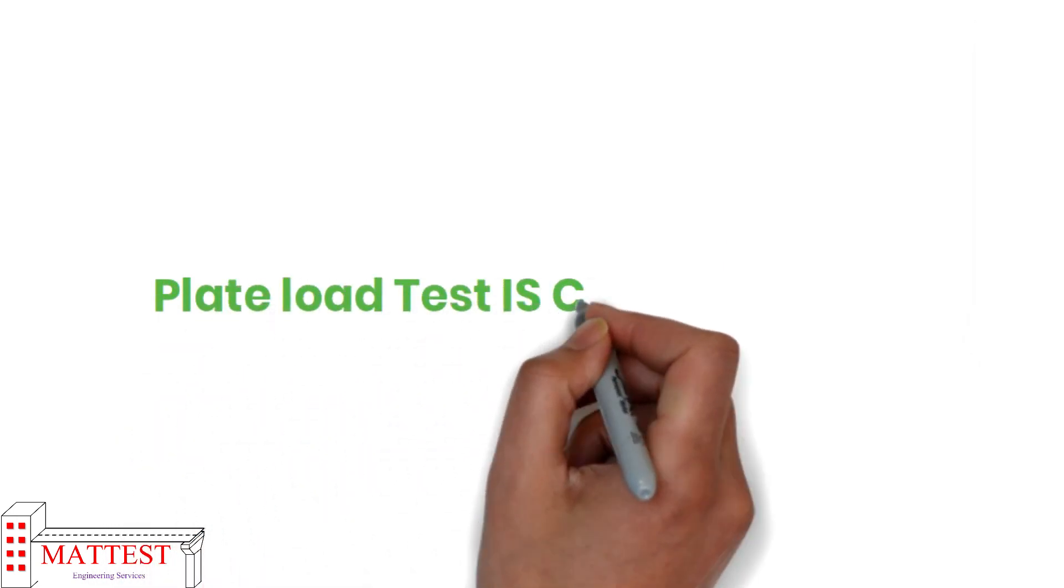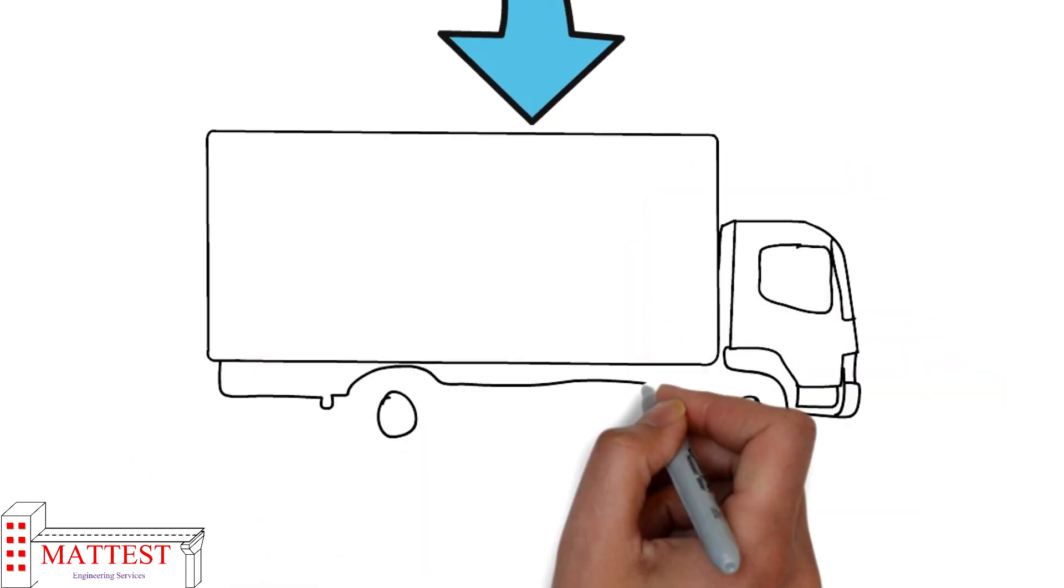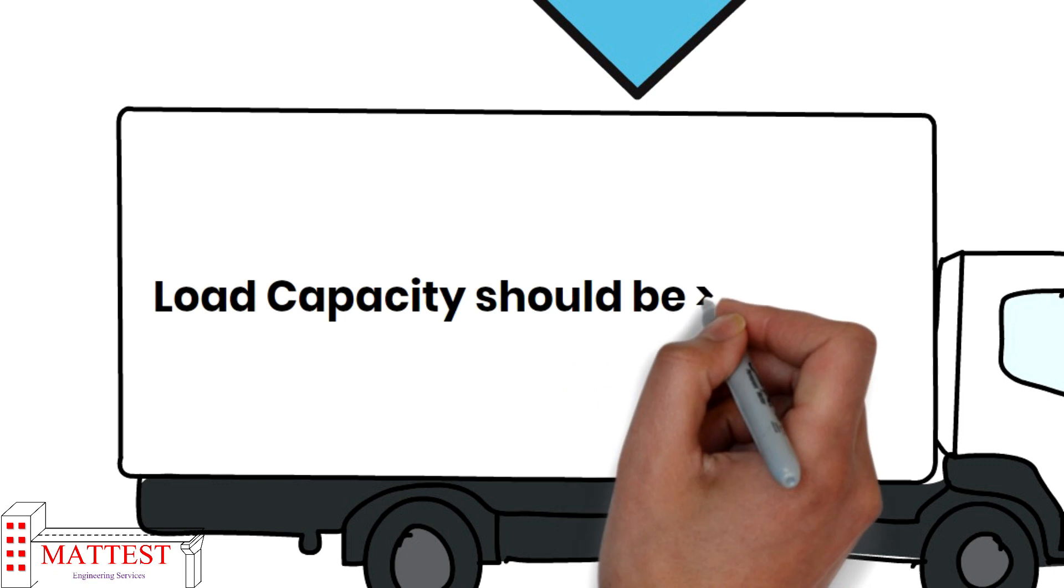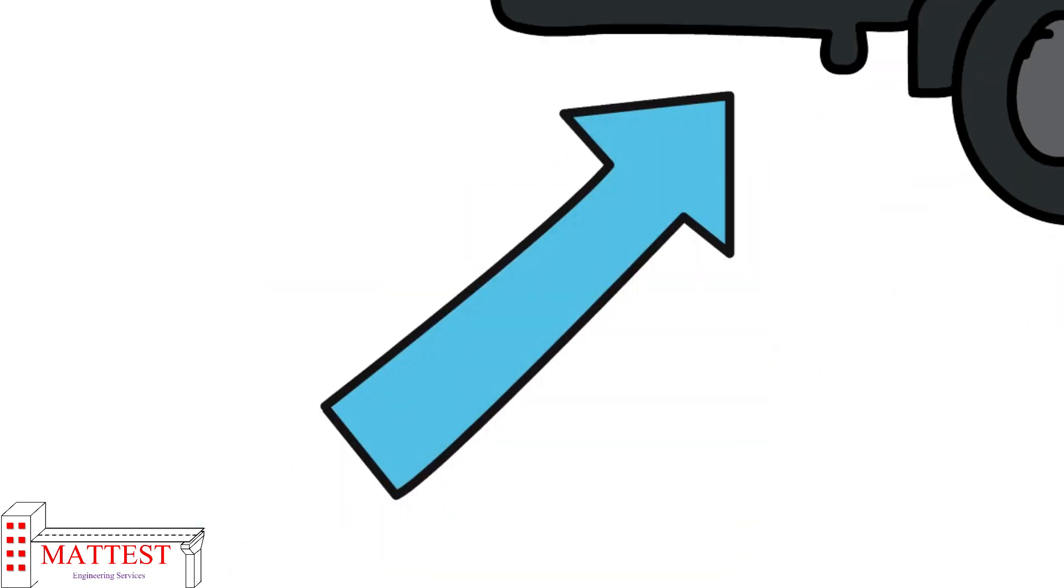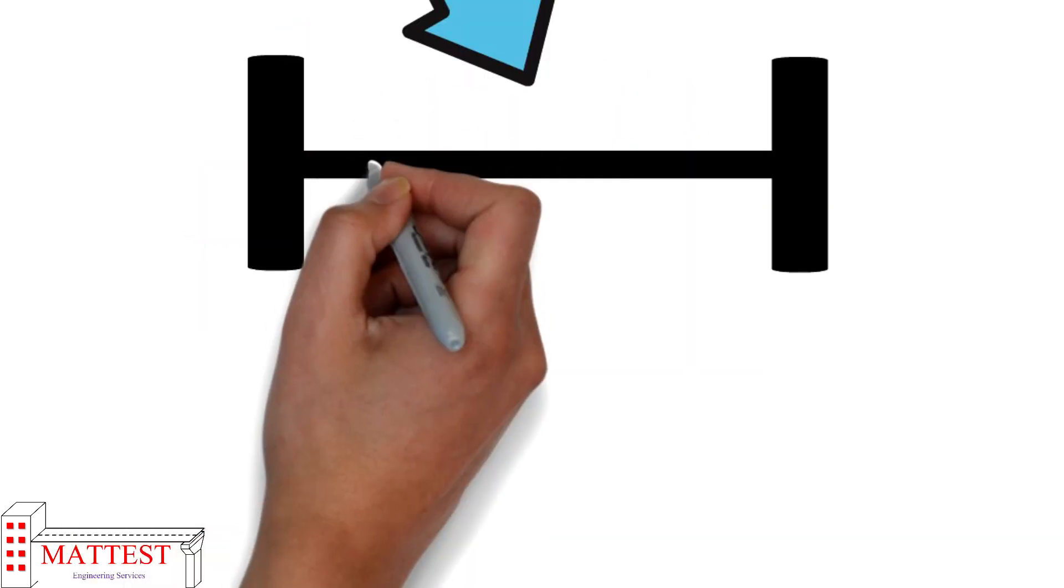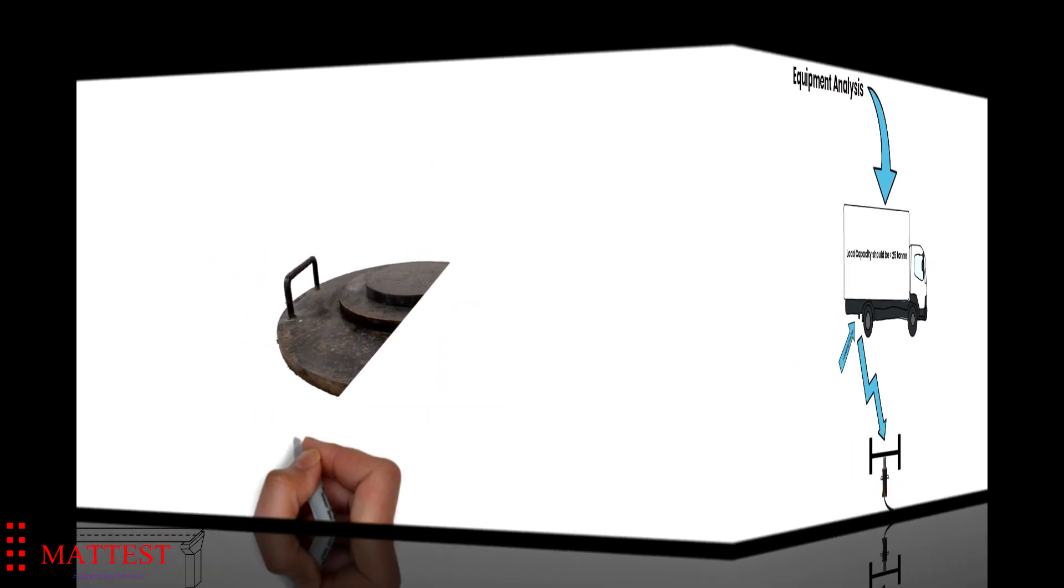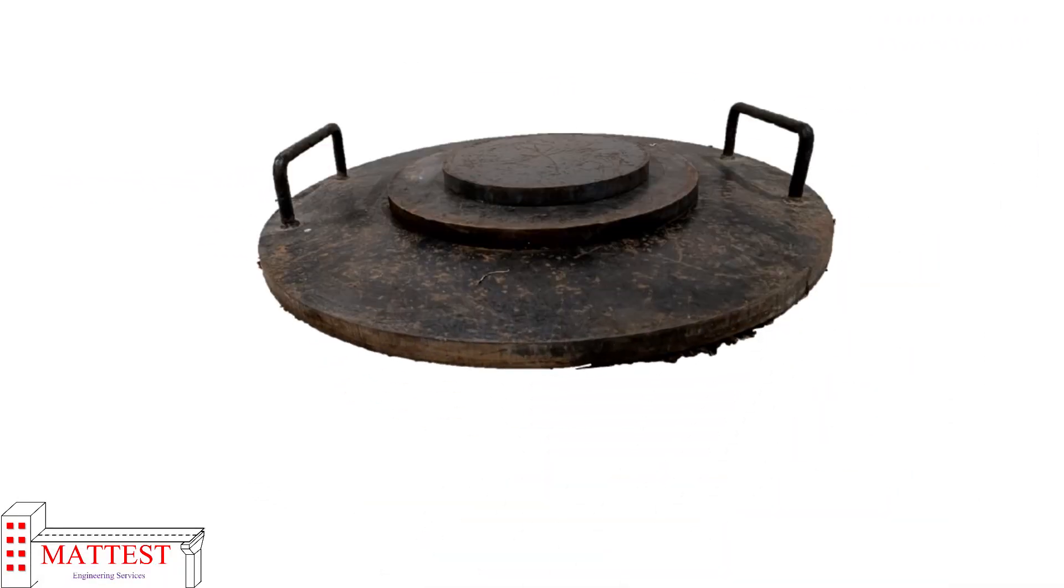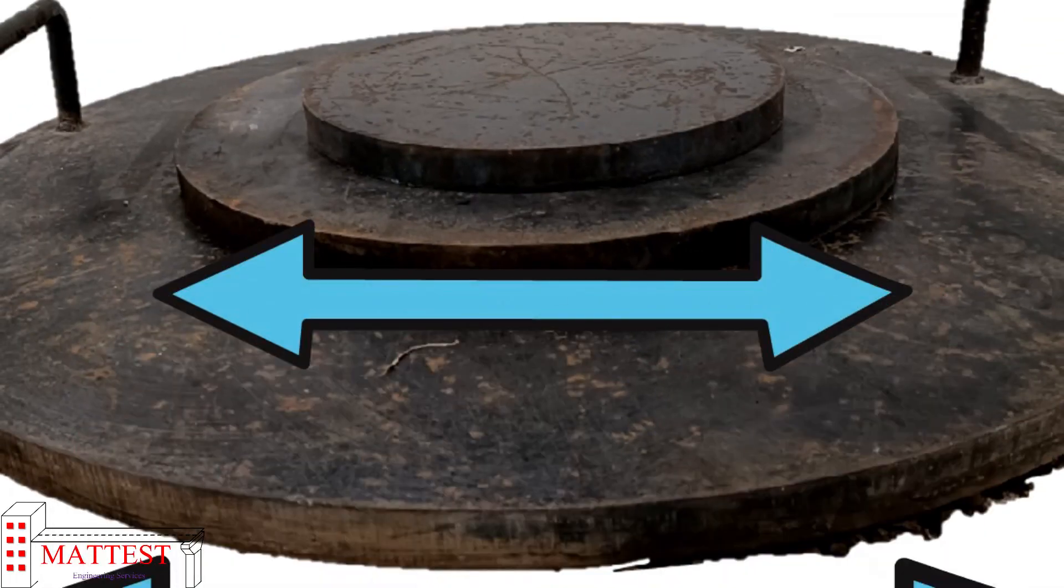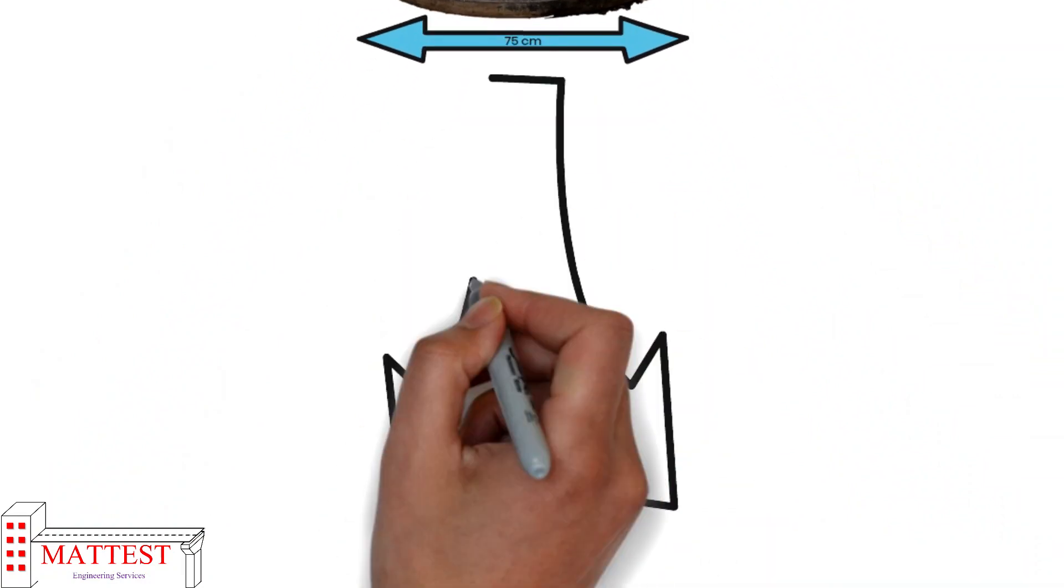Now we will see the procedure of plate load test as per IS code 9214-1974. To perform this test we need different types of equipment. First we need a loading frame, and here we have used truck as a loading frame with load capacity greater than 25 ton. Next we need a hydraulic jack. After that, we will require bearing plates of different sizes: 75 centimeter diameter, 60 centimeter diameter, and 45 centimeter diameter, with thickness of 2.5 centimeter. Next we need 3 dial gauges with magnetic stand to measure the settlement.